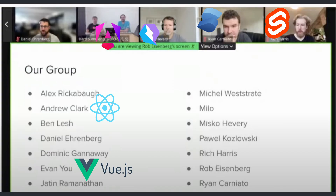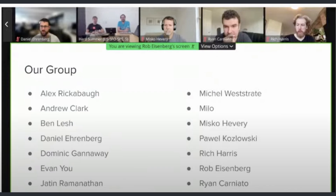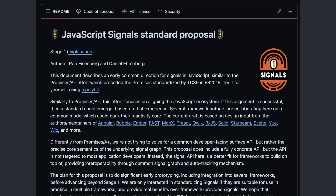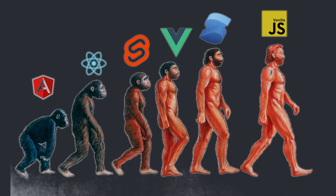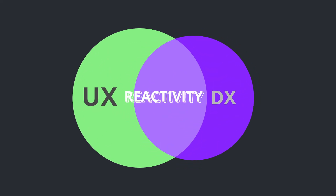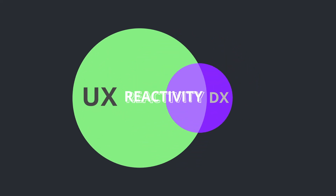There's an interesting story unfolding, as all major framework creators and contributors have come together to discuss integrating signals into ECMAScript. Just like async/await and Promises, signals could become a shared feature, enabling common tools like dependency graph visualization and debugging across different frameworks. Are signals truly the panacea? Will React join the others? I don't know how frameworks will evolve, but I do know that it's up to us to prioritize user experience in the reactivity equation.